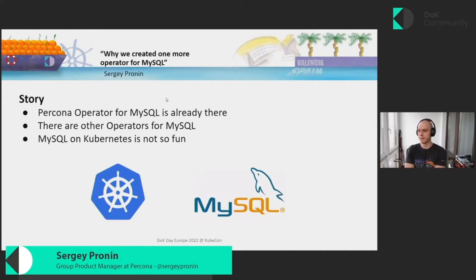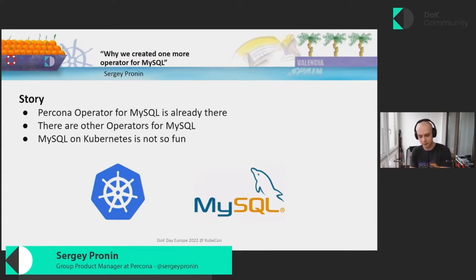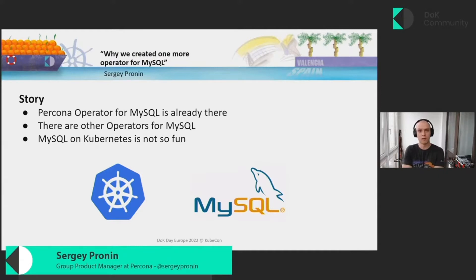The full story is here on your screen. Percona operator for MySQL is already there — we have it. There are other operators for MySQL, and they're pretty feature-rich. Some of them are production-ready. And everyone knows that running databases on Kubernetes — as the previous speaker mentioned — is not an easy thing. You need to always think about security, about provisioning databases, about managing them, and so on.